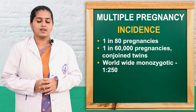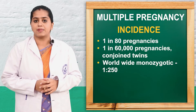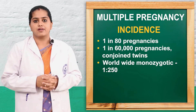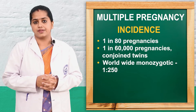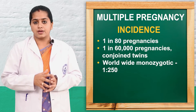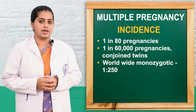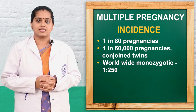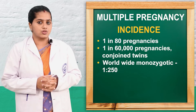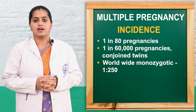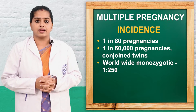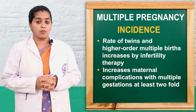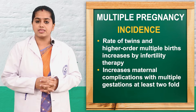The incidence is 1 in 70 to 100 pregnancies for twins in India. Nowadays 1 in 50 cases can also be identified, because of increased treatment of infertility and artificial reproductive technology. 1 in 60,000 pregnancies we can find Siamese, that is the conjoined type of twins, and 1 in 250 pregnancies we can see monozygotic type of twins. They have more complications of low birth weight, very low birth weight babies, and miscarriage.